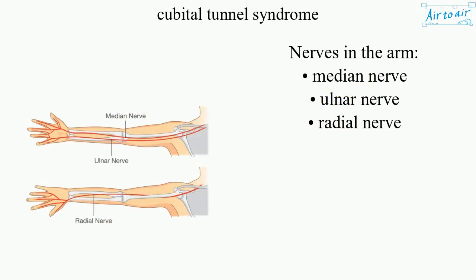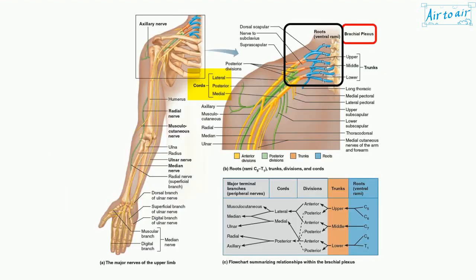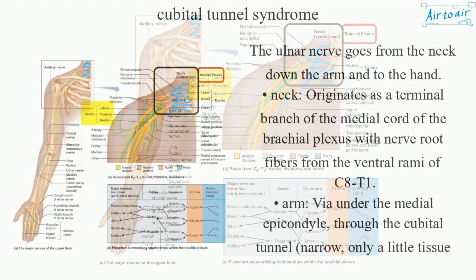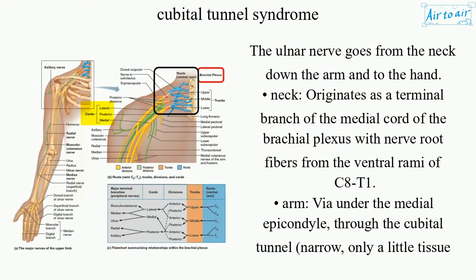Nerves in the Arm: Median Nerve, Ulnar Nerve, Radial Nerve. The ulnar nerve goes from the neck down the arm and to the hand.